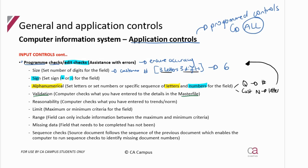If the input doesn't match the master file, there'll be a prompt saying there's an error because it doesn't match. A reasonability check compares what you have entered against the trends or the norm for that customer or wage employee. For example: how many hours did that wage employee work this week versus what they normally work — does that seem reasonable? How much stock does that customer generally purchase versus what they purchased now — does that seem reasonable? It's just a check against the trends or norms for whatever we are entering.